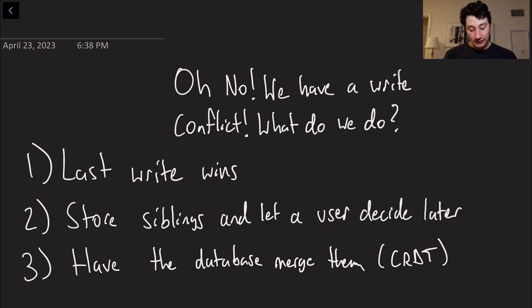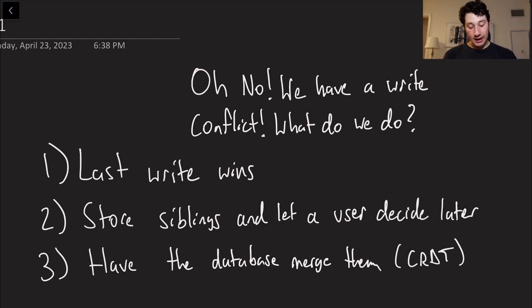The first one is last write wins, aka LWW, which I'm now going to write right here. Last write wins is not really very reliable because we can't really trust timestamps in distributed systems because they can get out of sync with one another and jump around due to NTP.